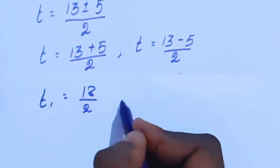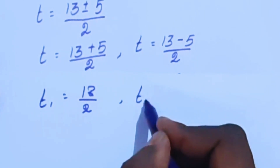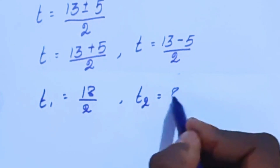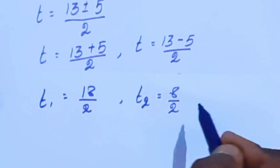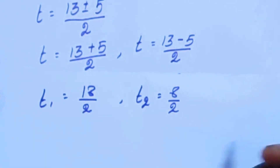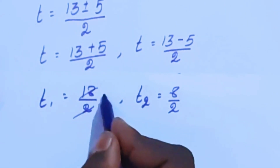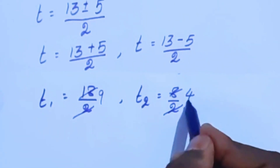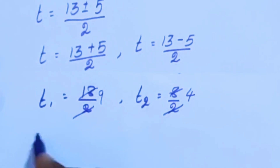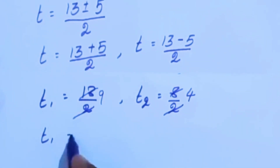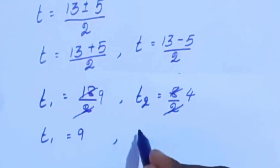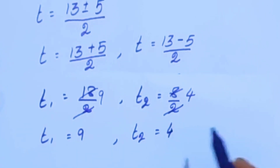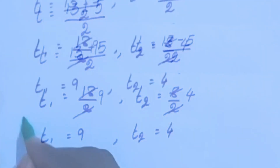So t2 equals 13 minus 5 is 8, divided by 2, which gives 4. Simplifying, t1 equals 9 and t2 equals 4. Now we verify these solutions.